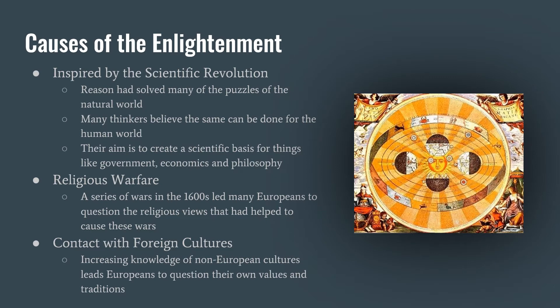The Enlightenment had a number of causes, but perhaps the most important was the scientific revolution. Europeans were very excited about the scientific revolution because they had used reason to solve many problems and questions in the natural world. They had figured out how gravity worked, how their solar system functioned, and had discovered all sorts of new things using reason and science. So in the Enlightenment, thinkers started to believe that humans could use the same methods from science to discover truths about the human world — they hoped to create a scientific basis for government, economics, philosophy, and even art. Basically, they wanted to create a science of society.